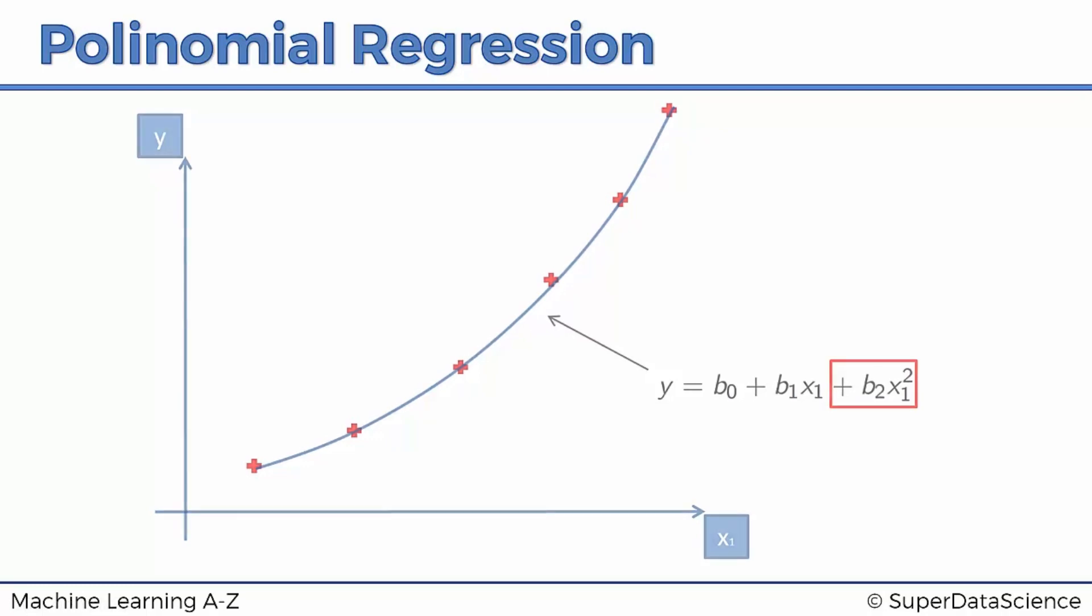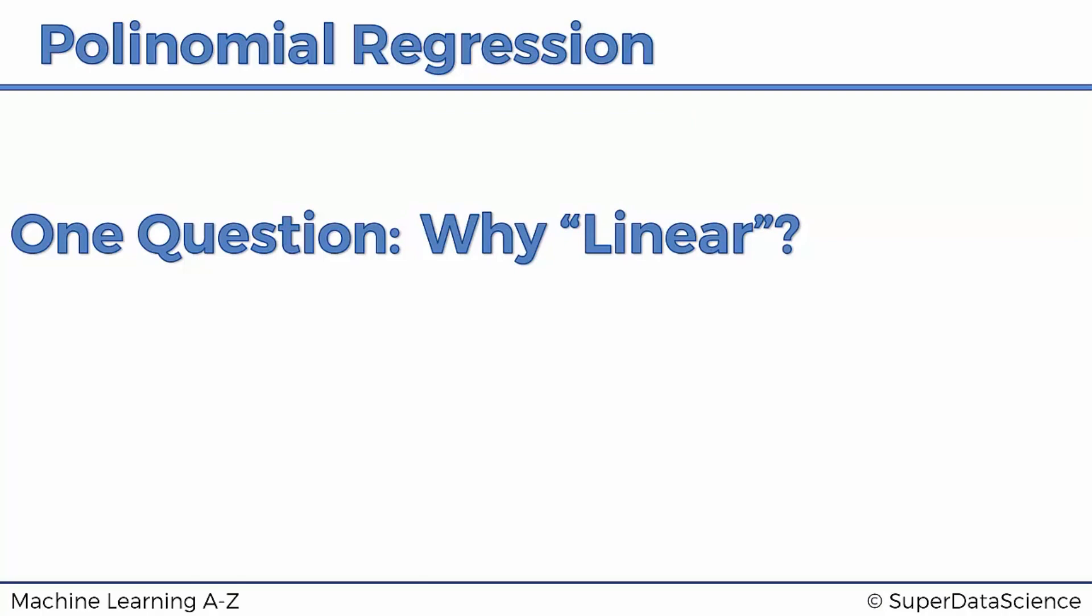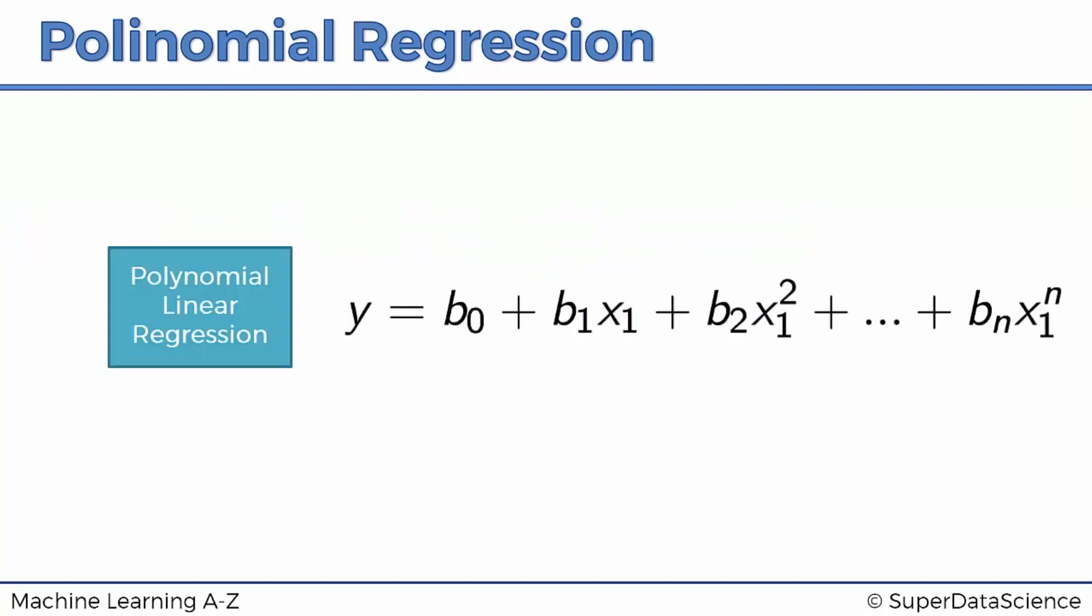And we have one final question left. The question is, why is it called linear still, right? So we saw those different powers, squared, cubed to the power of n, and so on. Why is it still called linear? And I'll show you what I mean. If you look on the left here, it says polynomial linear regression. So why is it still called a linear regression if it's a polynomial regression?